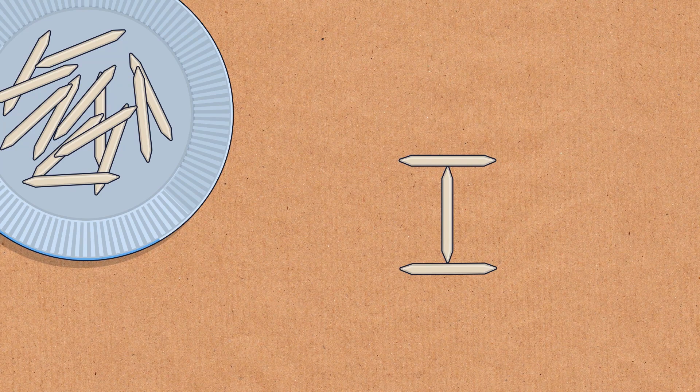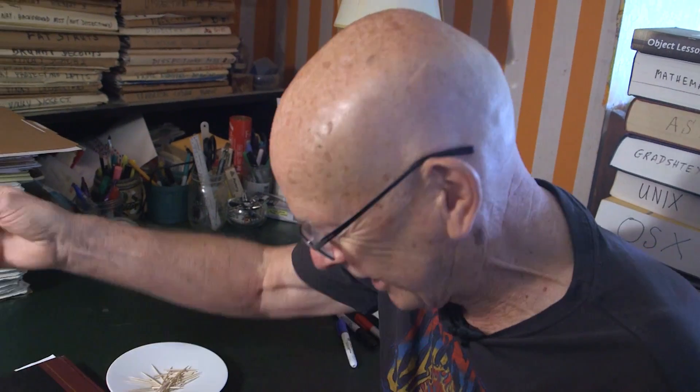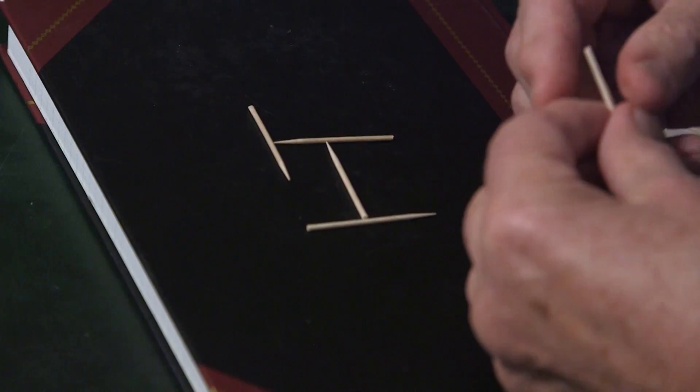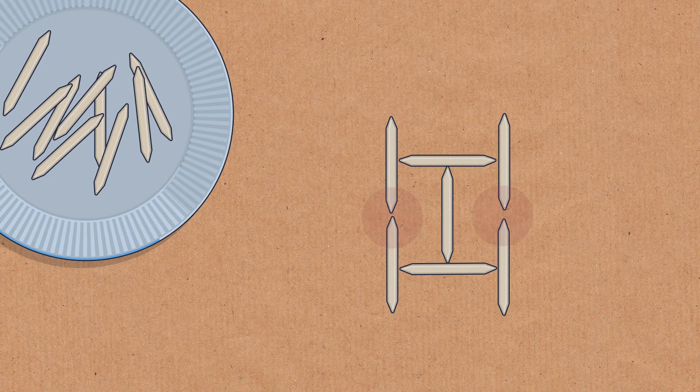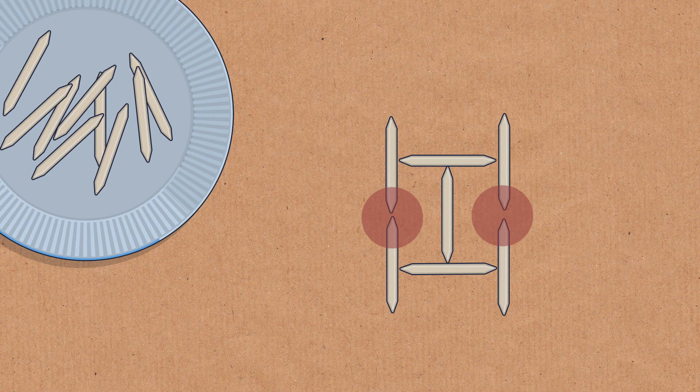So now we've got three toothpicks. We notice now there are four ends. So on each end we put a toothpick, and these toothpicks actually touch. So those ends are no longer free, and we keep going.